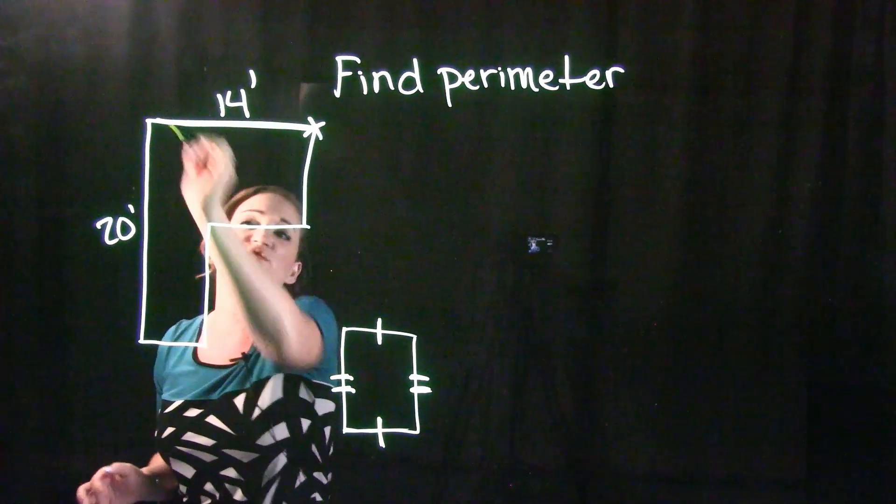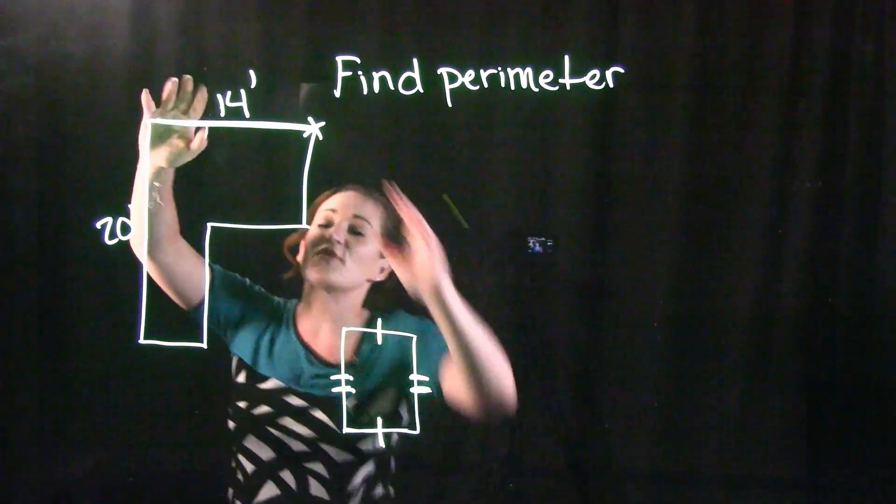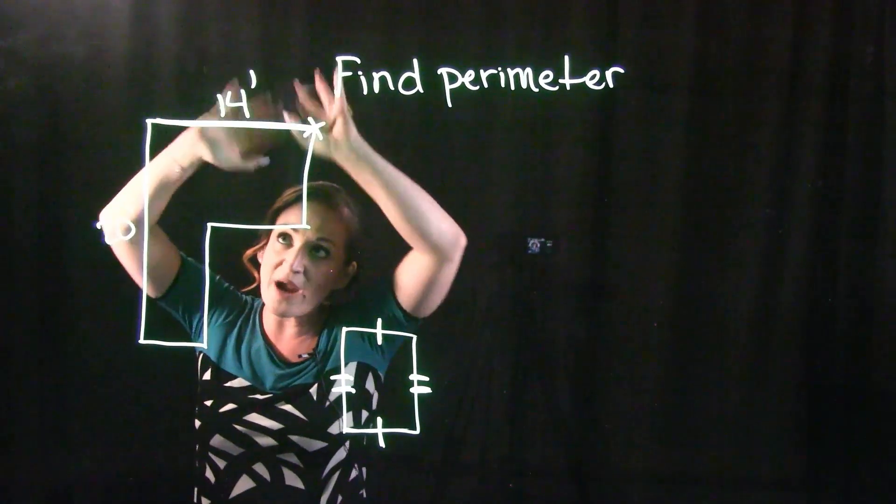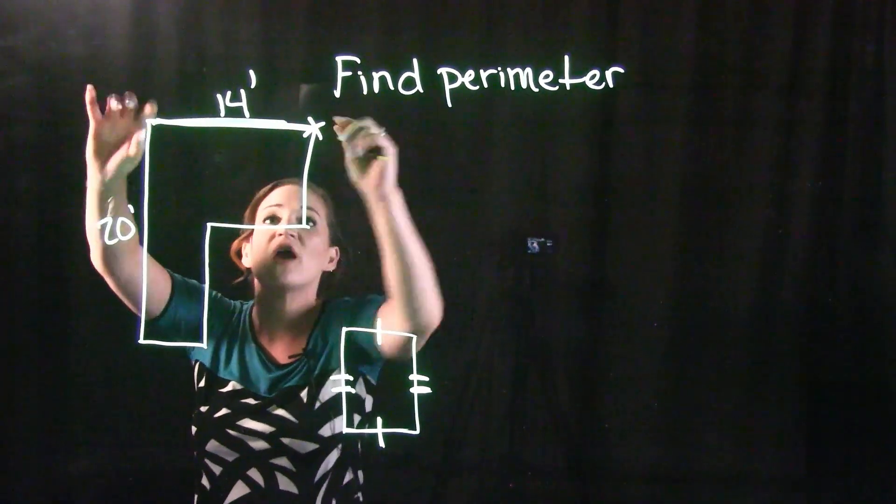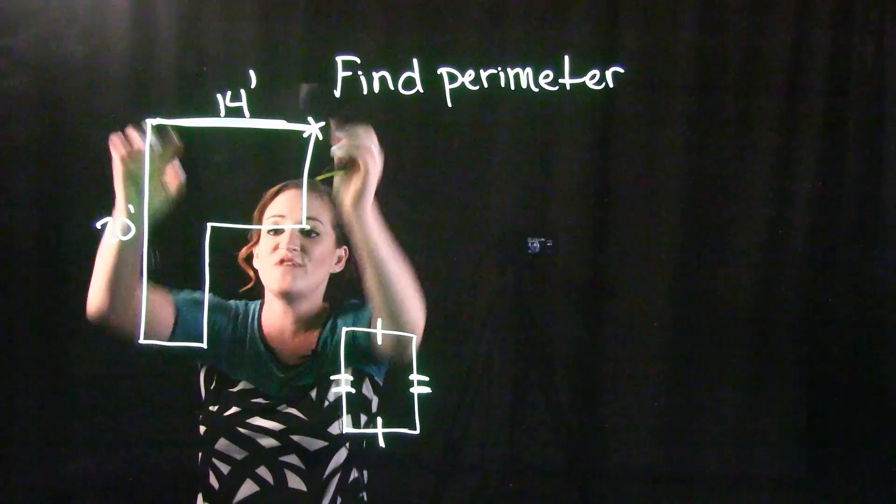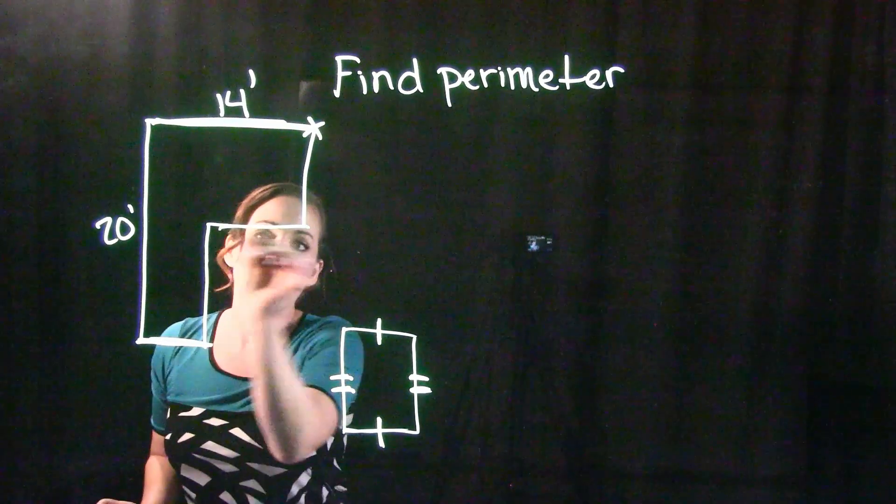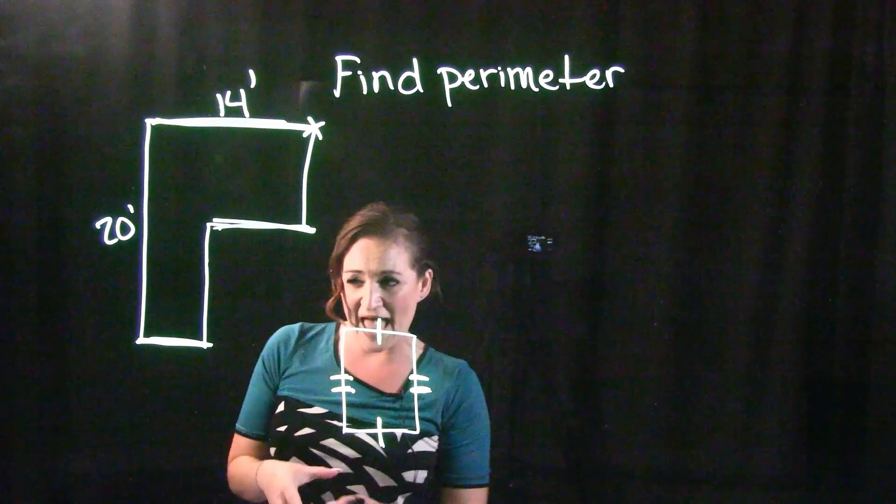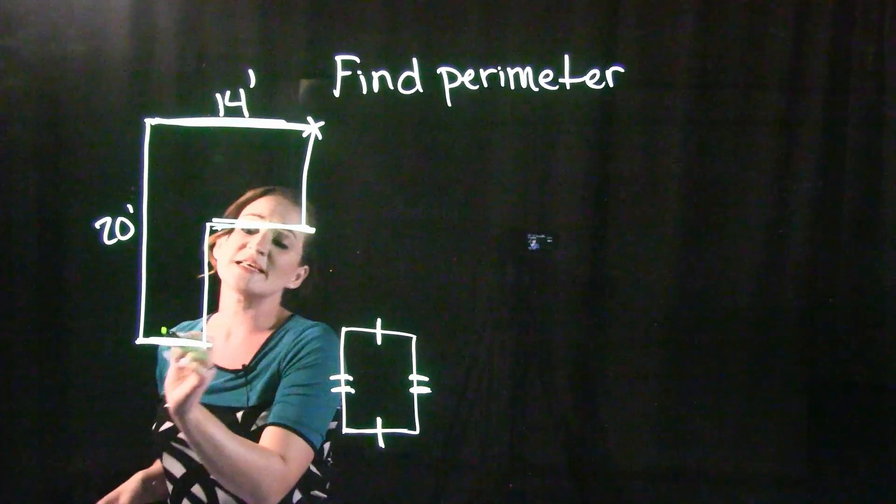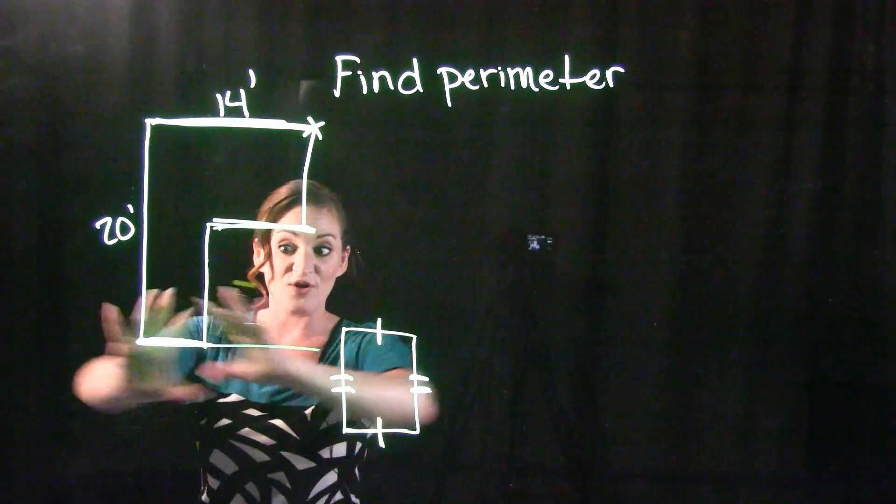So I could then say, hey, if this entire length here is 14 feet, this length here would have to add up to 14 feet. Because technically this is the entire length across. It's just broken up into this section right here and then this section right here.